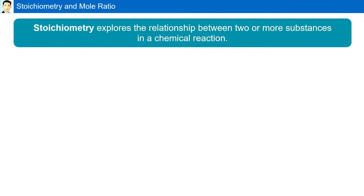Stoichiometry explores the relationship between two or more substances in a chemical reaction. Stoichiometry is based on the law of conservation of mass.